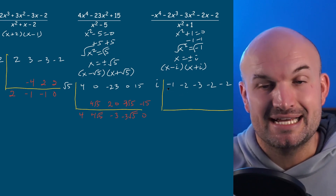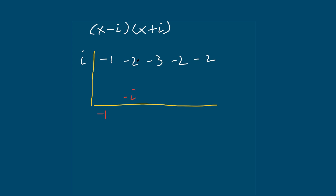In the last example, I'm multiplying using i's. I have negative one — bring down the first term. Negative one times i is negative i. Negative two plus negative i: you can't combine those, so I leave them as negative two minus i. Now negative two minus i times i: using the distributive property, i times negative two is negative two i, and i times negative i is negative negative one, which is positive one. Combining: negative three plus one gives negative two, leaving negative two i minus two. Multiplying again by i: i times negative two i is positive two (since i squared is negative one), and negative two times i is negative two i. Adding together, negative two and positive two cancel to zero, leaving just negative two i. And i times negative two i gives positive two, which leaves zero.